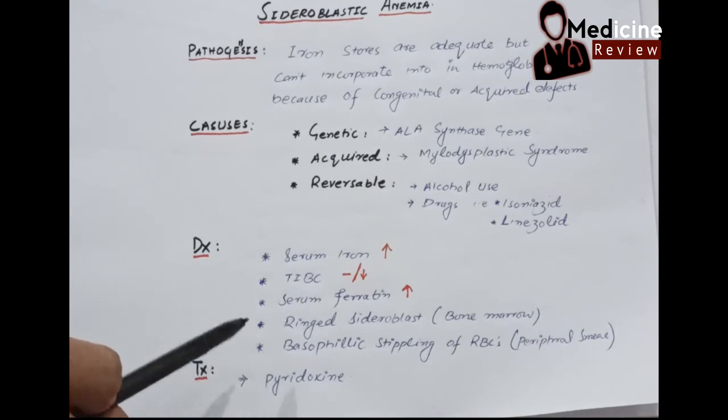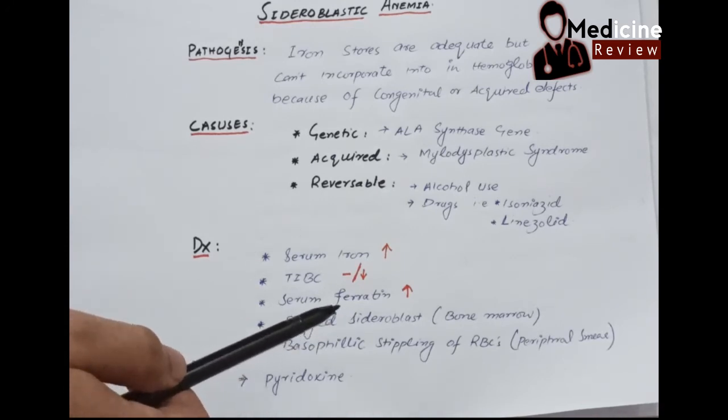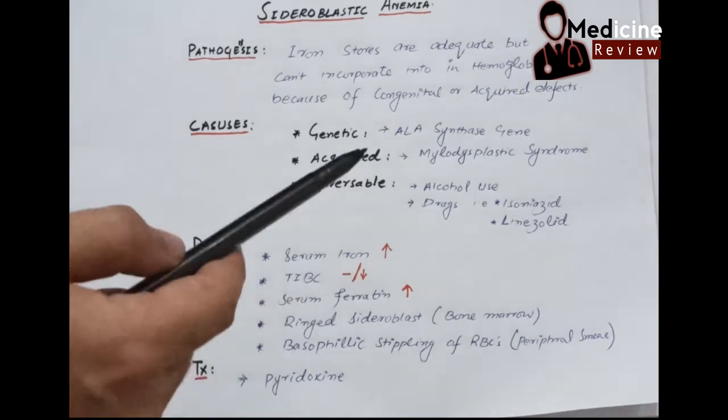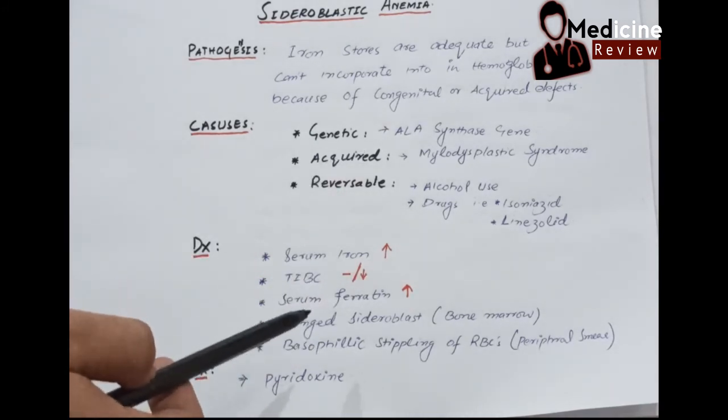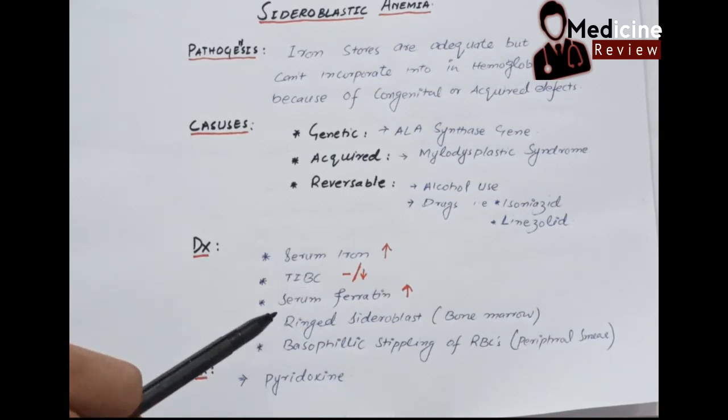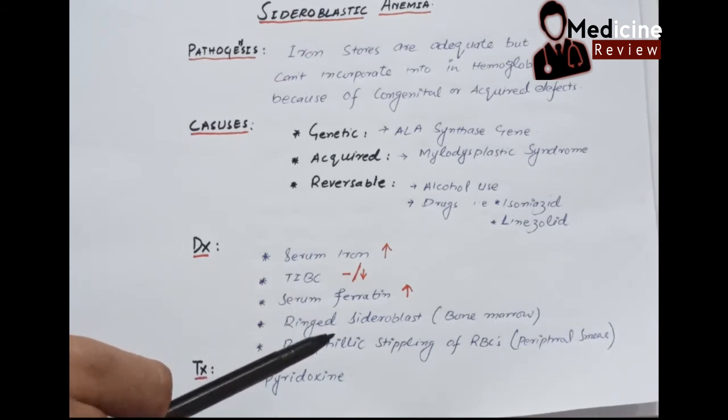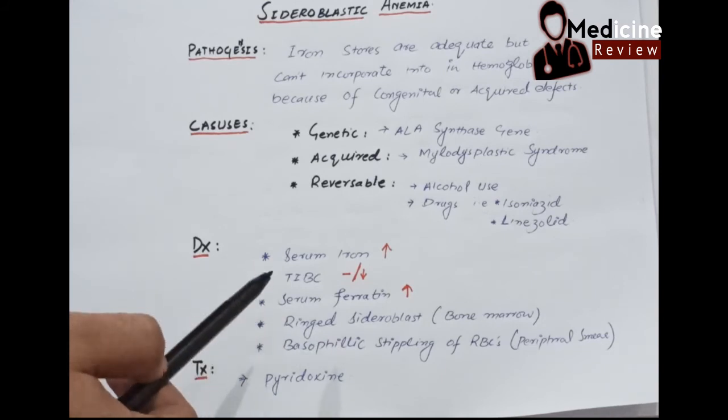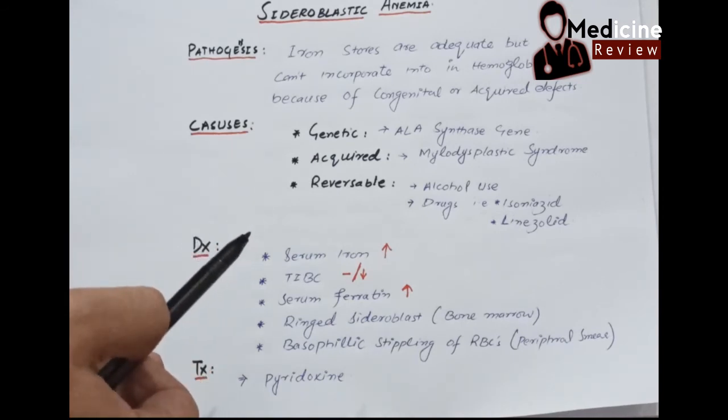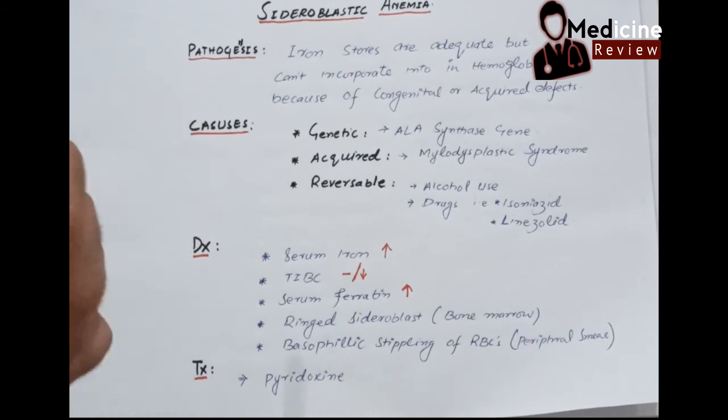This is very important: ring sideroblasts in the bone marrow. When we take a biopsy from the bone marrow and look at the RBCs, the RBC will have iron-laden mitochondria. This is a diagnostic point. Another important point on the peripheral smear is basophilic stippling of RBCs. These two are very important to remember in any scenario, for diagnosis and clinical practice, to diagnose sideroblastic anemia.